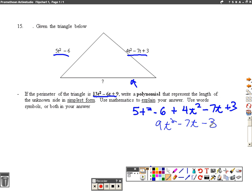And that represents the length of these two sides. So we're going to take our perimeter and subtract the two sides we know, the sum of those two sides.